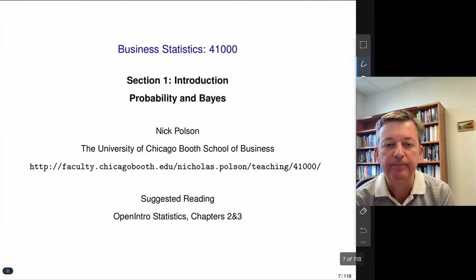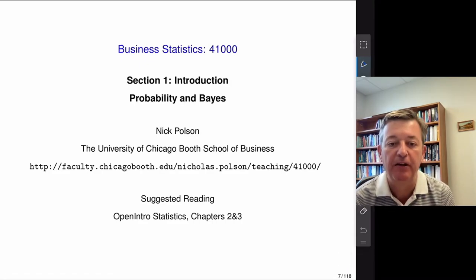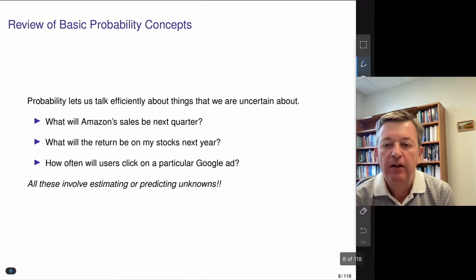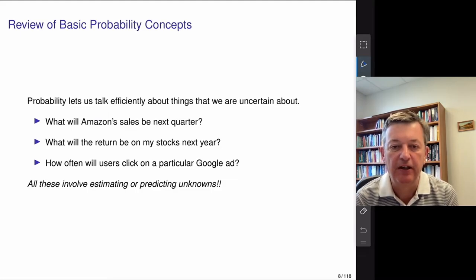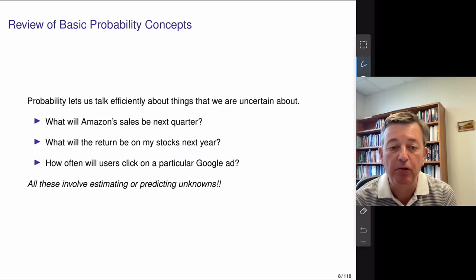In week one, we're going to talk about probability and Bayes, and we'll directly look at Bayes' rule. First, let me review some very basic probability concepts. The idea behind probability is that it lets us talk efficiently about things we're uncertain about — for example, predicting Amazon's next quarterly sales, understanding returns on a stock portfolio, or figuring out the probability that somebody clicks through on a Google ad.